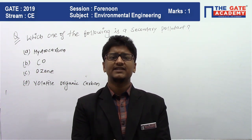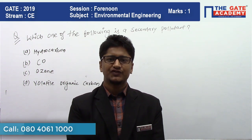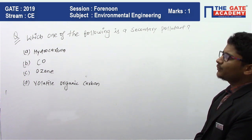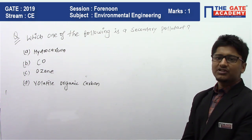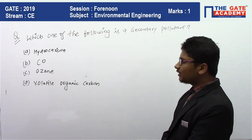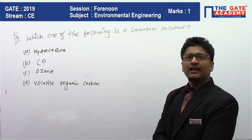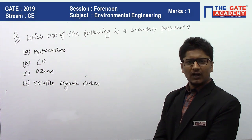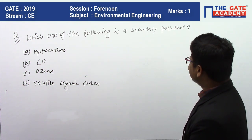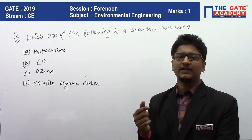The question is related to civil engineering and specifically environmental engineering. The question is: which one of the following is a secondary pollutant? The options are: (A) hydrocarbon, (B) carbon monoxide, (C) ozone, and (D) volatile organic compound.